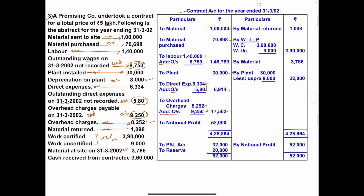Next, material returned — it is to be credited: ₹1,098. Work certified and work uncertified are taken on the credit side under the head 'work in progress.' Work certified amount is ₹3,90,000, work uncertified amount is ₹9,000, and the total of these two is ₹3,99,000.